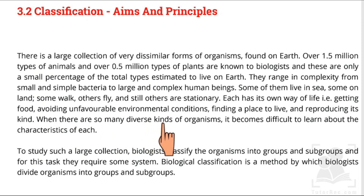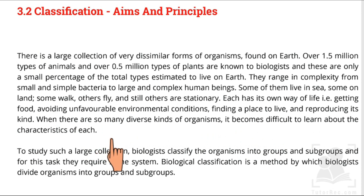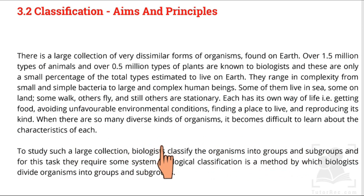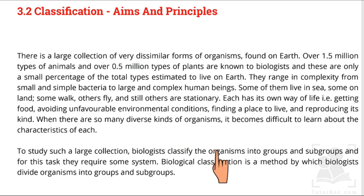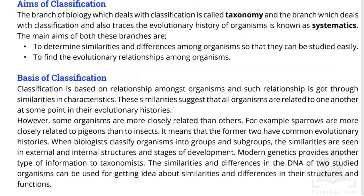When there are so many diverse kinds of organisms, it becomes difficult to learn about the characteristics of each. With such a diversity of animals and plants, it is very difficult to study every organism individually. So to study such a large collection, biologists classify organisms into groups and subgroups. Biological classification is a method by which biologists divide organisms into groups and subgroups.